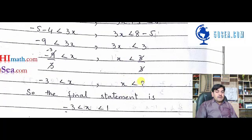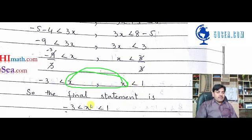So our final statement will be like this. There's x here and x here. So we get -3 < x. Think of it as -3 < x and x < 1. So our final statement becomes: -3 < x < 1.